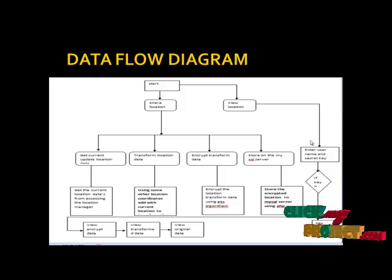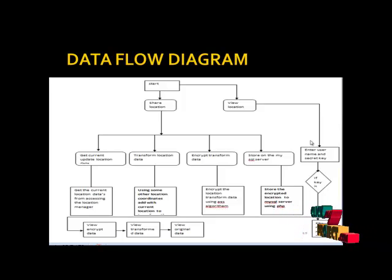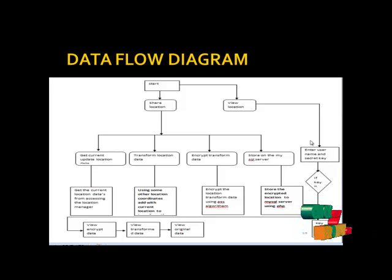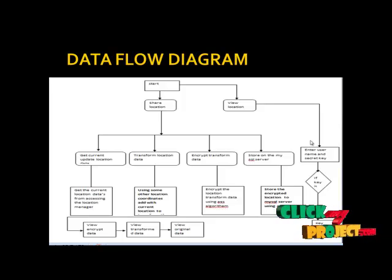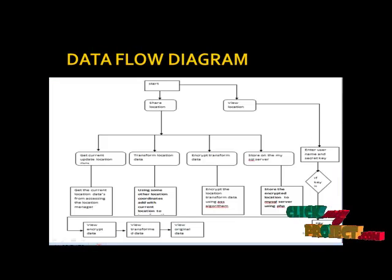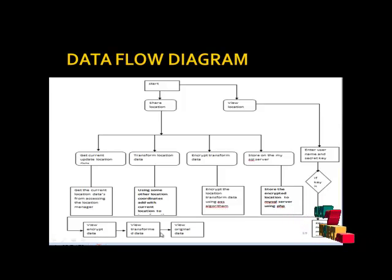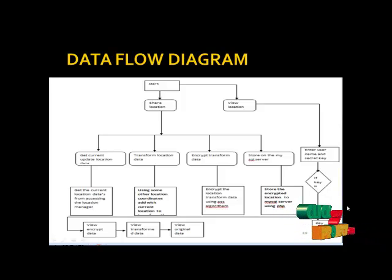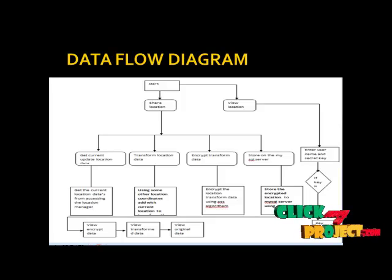In the Share Location flow, the other module is the 'View Location' module. In the View Location module, you enter the name, phone number, and secret key of the other user whose location you want to see. If the key is matched, then view the encrypted data, next view the transformed data, and finally view the original data. If the key is not matched, a 'key not matched' message will be displayed. Let's see the modules of this project.